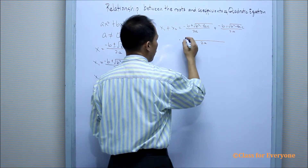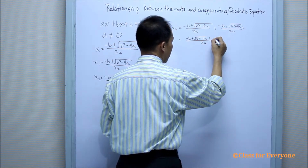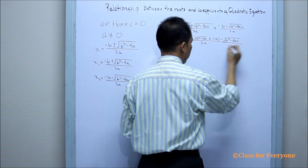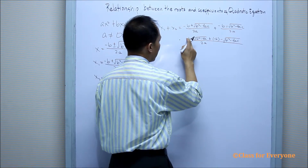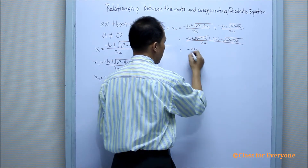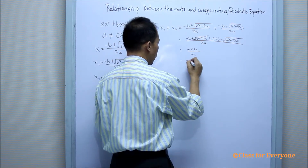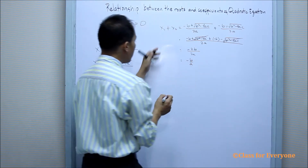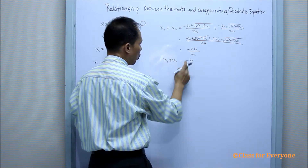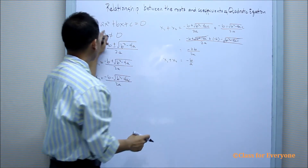The denominator is 2a. We have negative b plus the square root of b squared minus 4ac, combined with negative b minus the square root of b squared minus 4ac. The two negative b terms give us negative 2b, and the square root terms cancel out. So we have negative 2b over 2a. Since both have a factor of 2, this simplifies to negative b over a. Therefore, the sum of the roots equals negative b over a, where b and a are the numerical coefficients of the x terms.